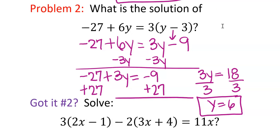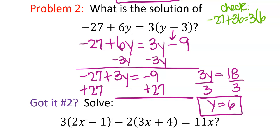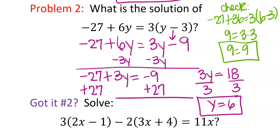To check: negative 27 plus 6 times 6 equals 36, so negative 27 plus 36 equals 9. On the right, 3 times (6 minus 3) equals 3 times 3, which also gives 9. When checking, don't switch sides — just keep it as it is and simplify both sides. If they equal each other, you're right; if they don't, you are not right.